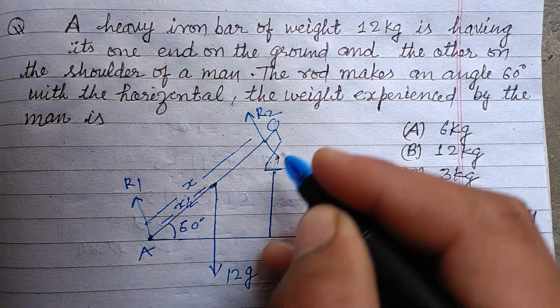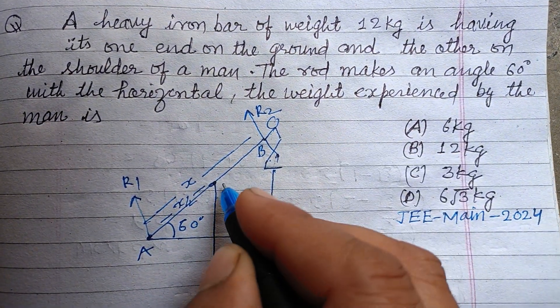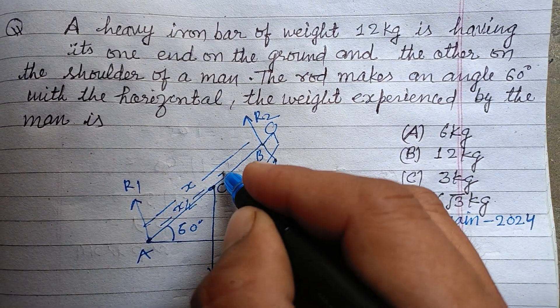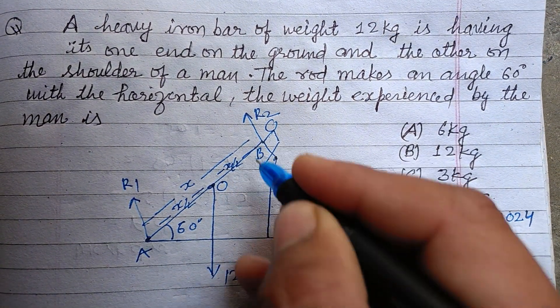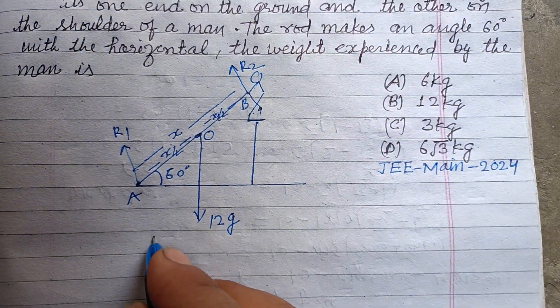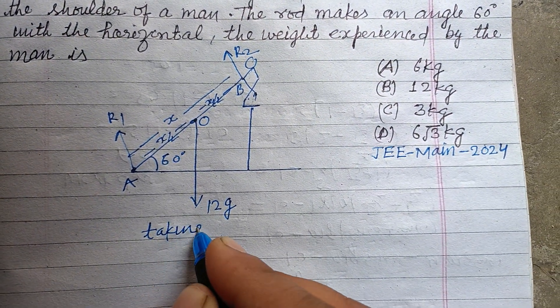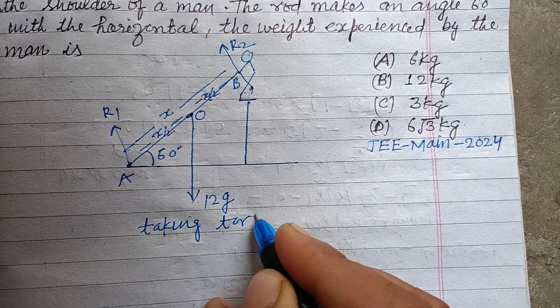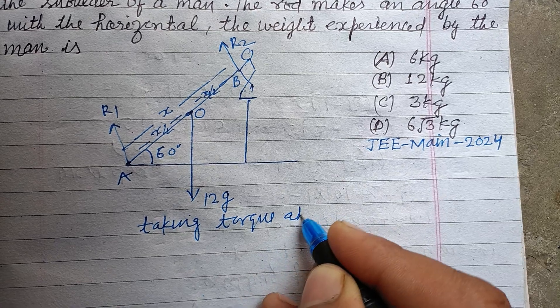And this point is X/2. Let it be A, B and this is O. This is X/2. Now taking torque about A.